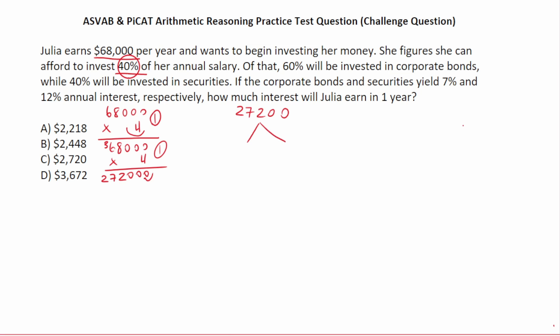She's going to split this two ways. 60% of that amount is going to be invested in corporate bonds, and 40% of that amount is going to be invested in securities. So let's find 60% of 27,200, and then we'll find 40% of 27,200.